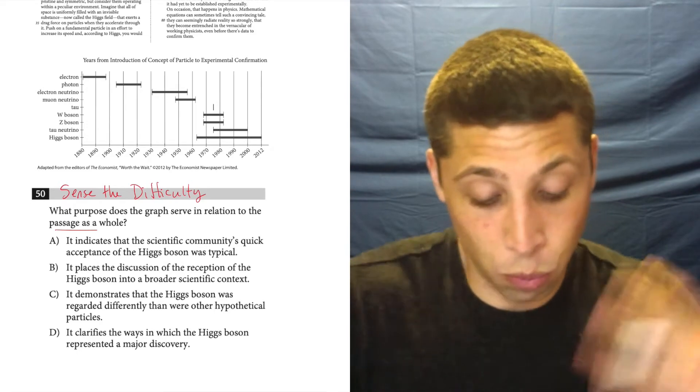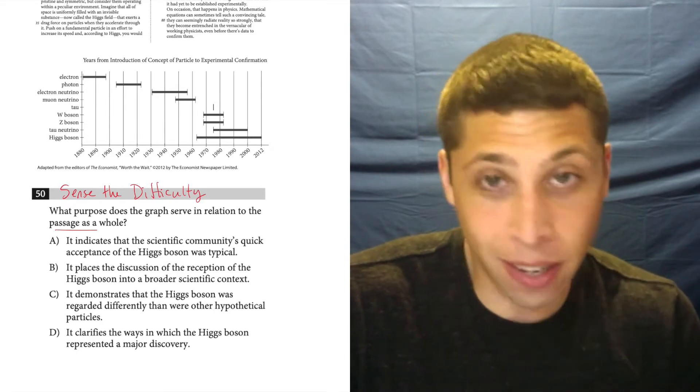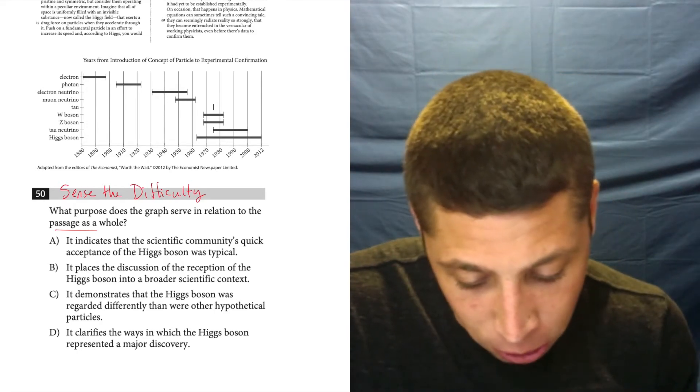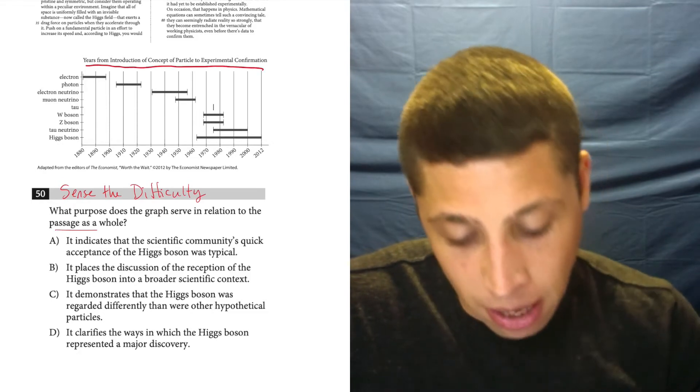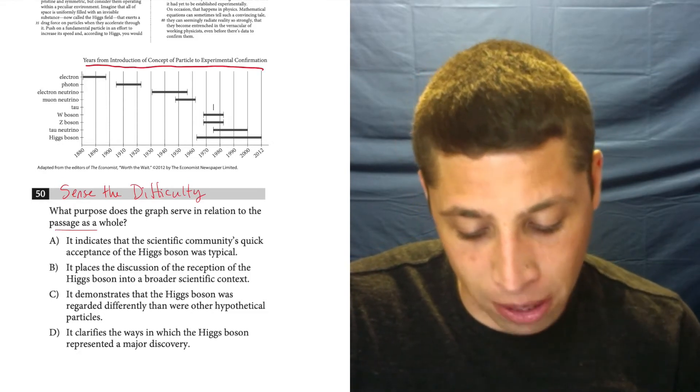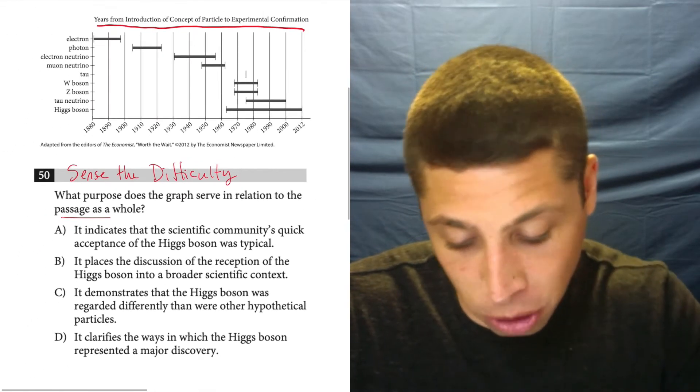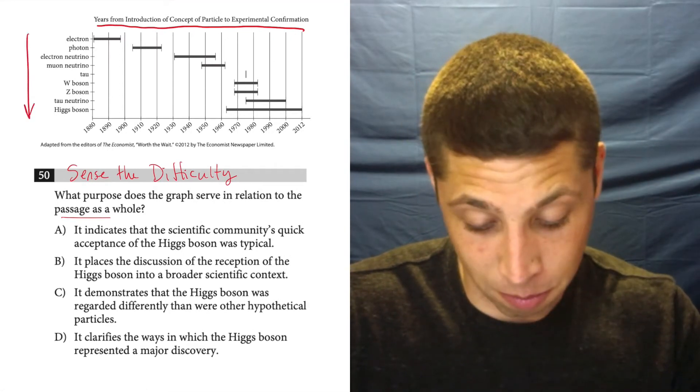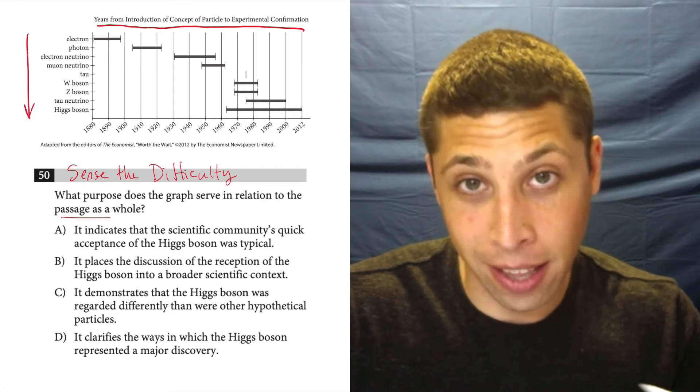So let's just look at these choices. What is the graph saying and how does it relate to the choice? Well, years from introduction of the concept of a particle to the experimental confirmation. So that's literally just going through a bunch of particles, showing us when they were introduced and then proven.